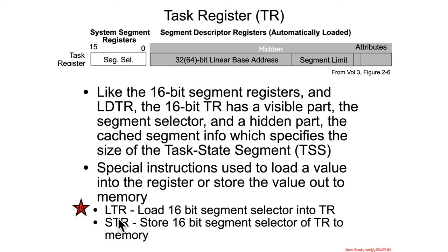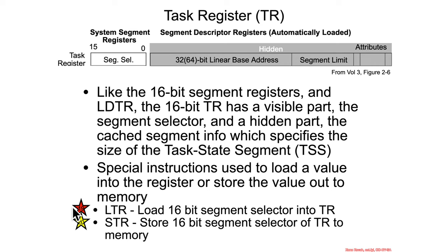To set this register there is an instruction LTR (Load Task Register), which installs the 16-bit segment selector, and STR, which allows you to read out the value of the task register. Once again we see the dichotomy where the instruction that writes to it is privileged and the instruction that reads from it is not privileged.